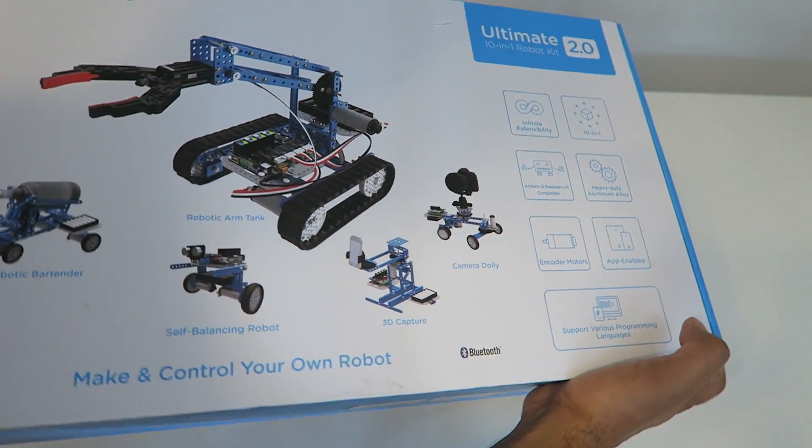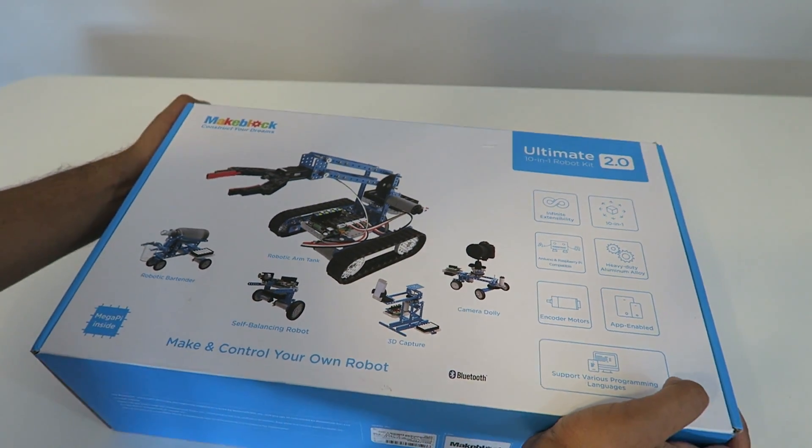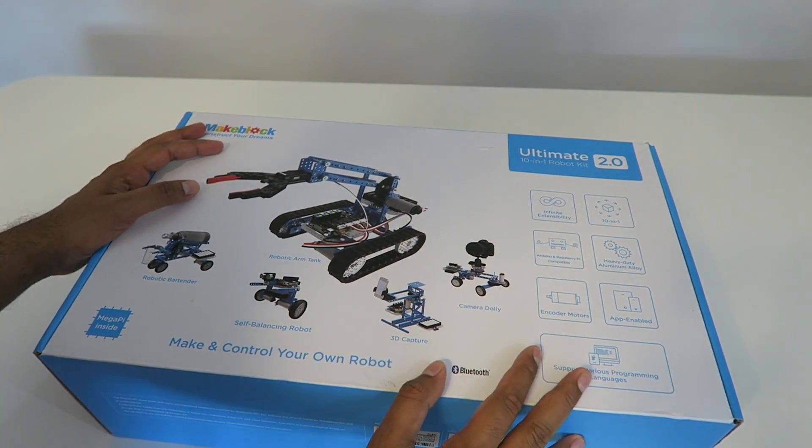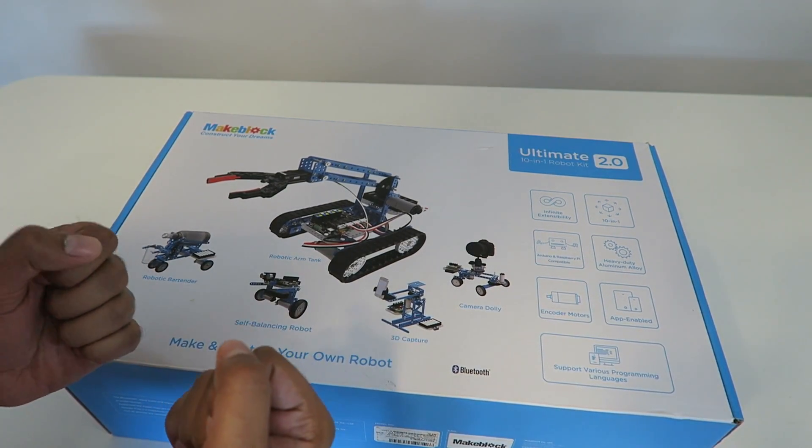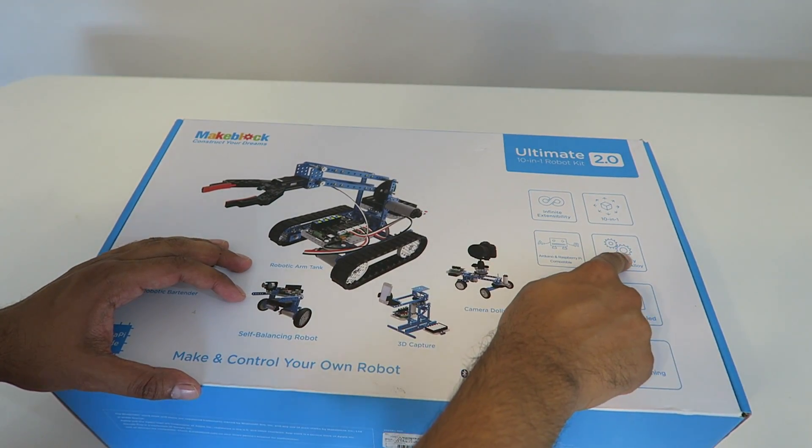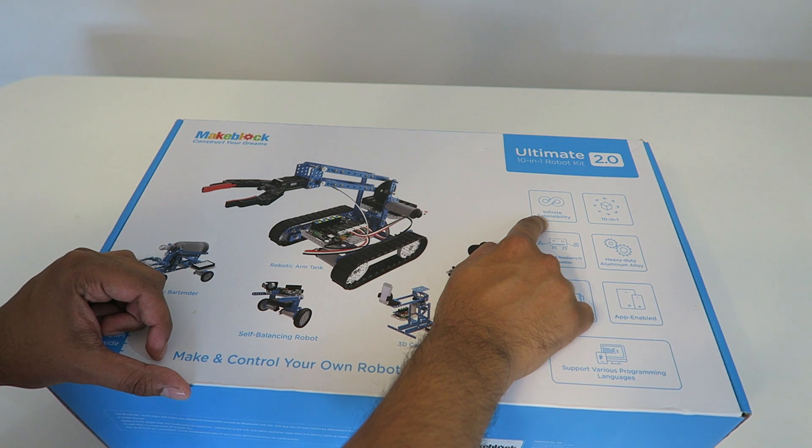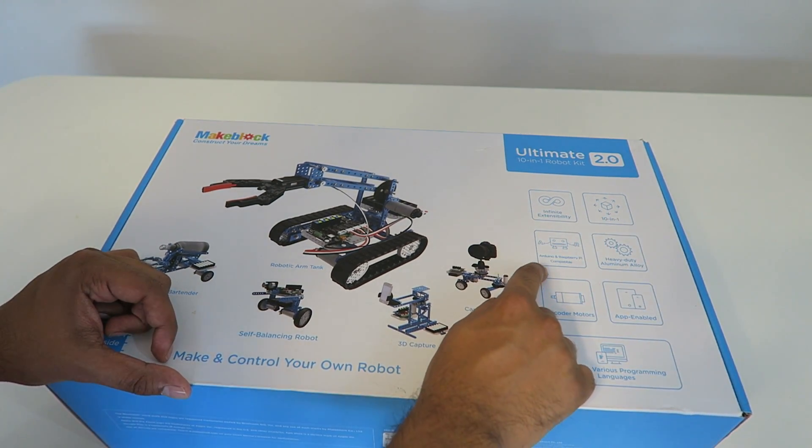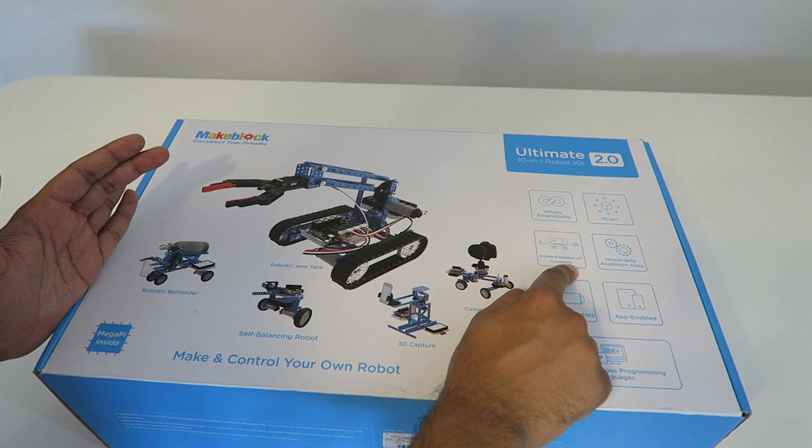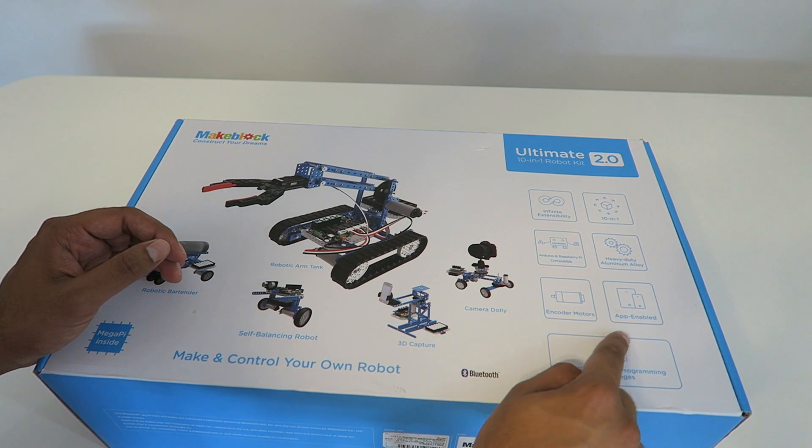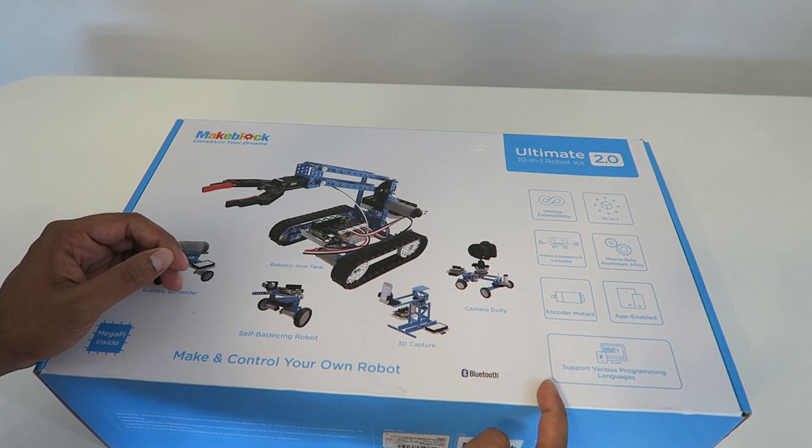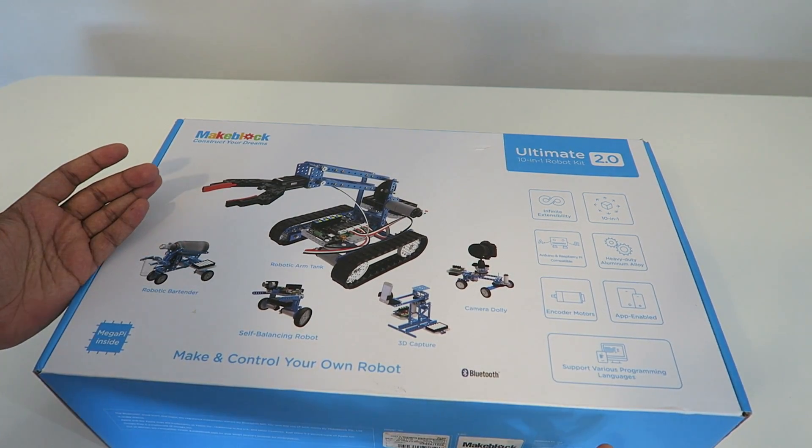Alright, so this here's our box and as you can tell, it's actually really, really big. It's actually very heavy too, just because the parts itself are actually made of high-grade aluminum, which is actually mentioned right over here. Now it does have infinite extensibility. It's a 10-in-1 kit. It is Arduino as well as Raspberry Pi compatible. It's app-enabled and it has encoder motors and it supports various different programming languages.